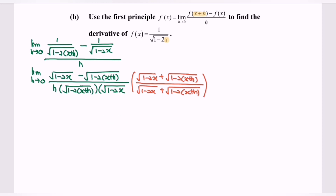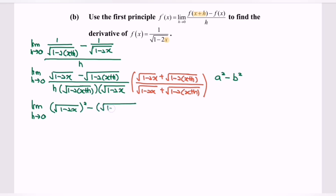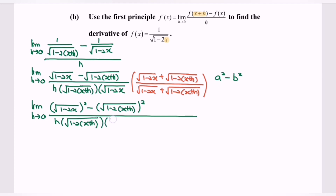So limit as h approaching 0, we apply the identity a squared minus b squared, because we have the multiplication of conjugates. So the numerator becomes: square root of (1 minus 2x) squared, minus square root of (1 minus 2(x plus h)) squared, over h multiplied by square root of 1 minus 2x, plus square root of 1 minus 2(x plus h).